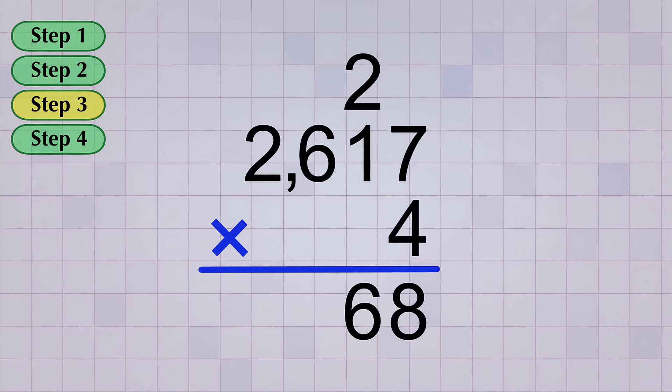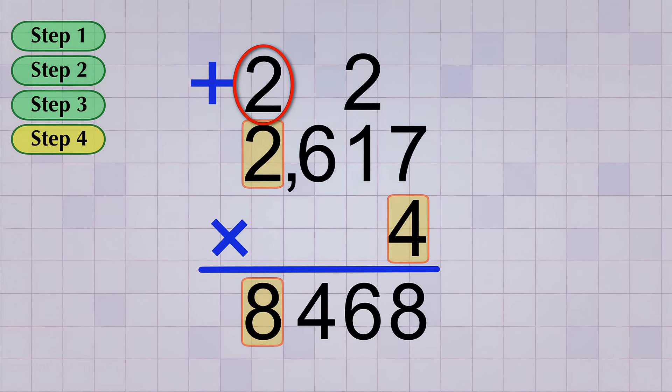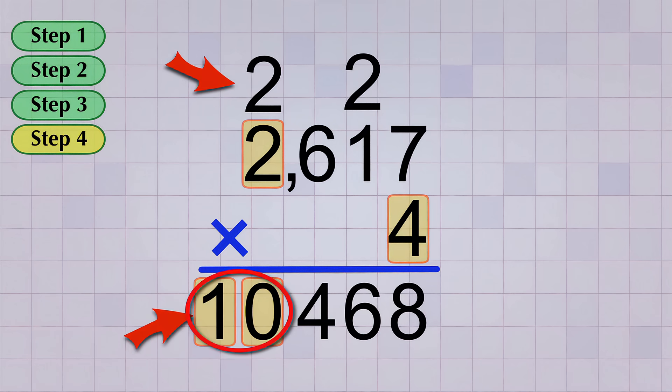For our third multiplication step, we'll multiply 4 times 6, and that gives us 24. It's a two-digit answer, so we'll need to carry again. The 4 stays in the answer, and the 2 moves up to the top of the thousands column. Now it's time for the fourth and last step. We multiply 4 times 2, which is 8, but then we need to add the digit we carried, which is a 2. So 8 plus 2 gives us 10, and that can go down in our answer line.